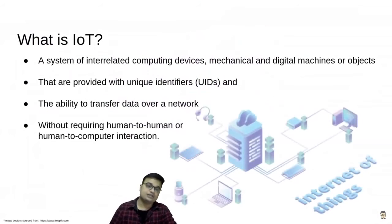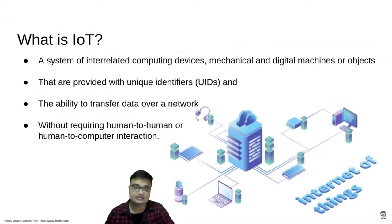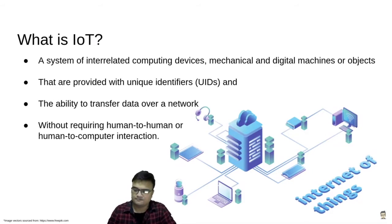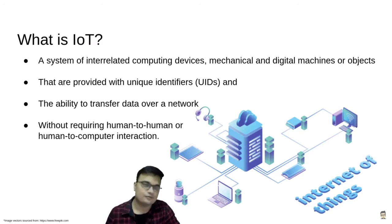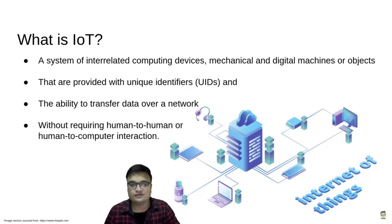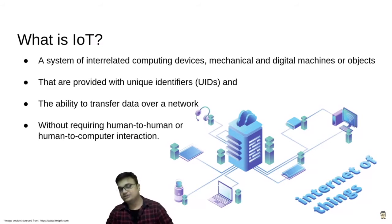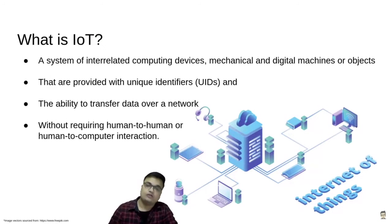The first question we need to answer before diving into further discussions is: what is IoT? We've all heard about the term and know it's an abbreviation for the internet of things, but what exactly is the definition? Like any other internet-abiding citizen, I went to Wikipedia and found the definition. Wikipedia defines IoT as a system of interrelated computing devices, mechanical and digital machines or objects that are provided with unique identifiers — also known as UIDs — and the ability to transfer data over a network without requiring human-to-human or human-to-computer interaction.